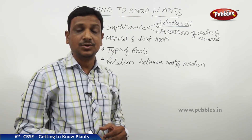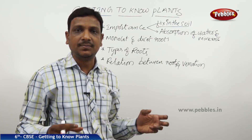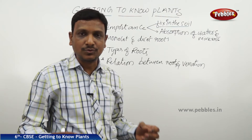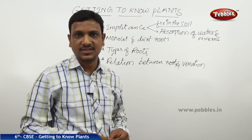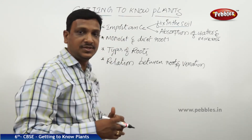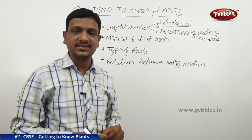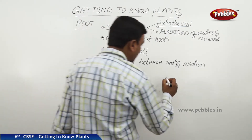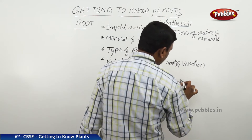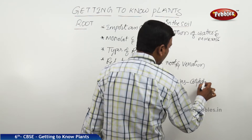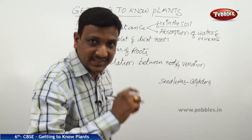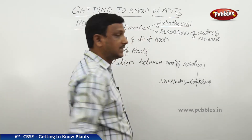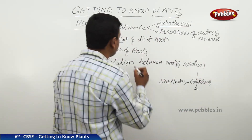Based on the seed type, we divide plants into two categories: monocot and dicot. If you observe the roots of these two, you will find some difference. The seed leaves are technically called cotyledons. Some seeds have only one seed leaf — they are called monocots. Some seeds have two cotyledons — they are called dicots.